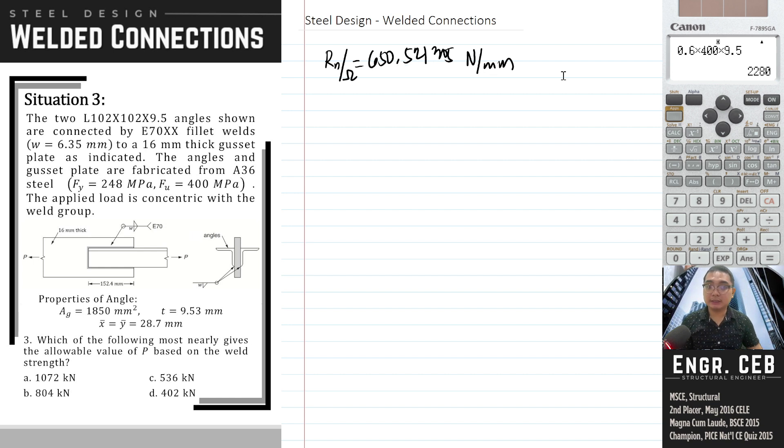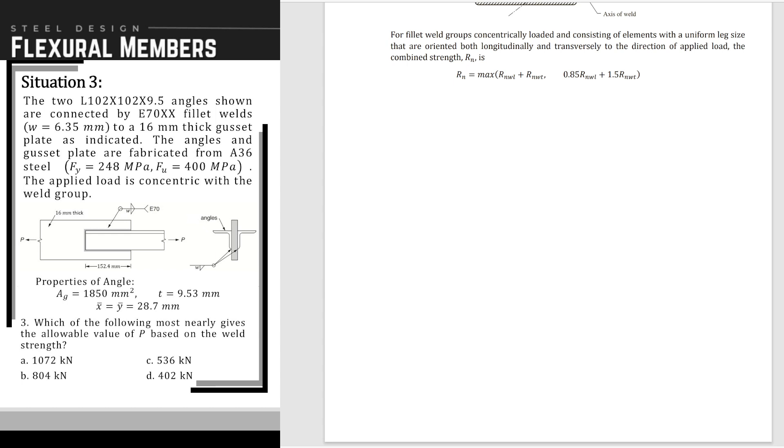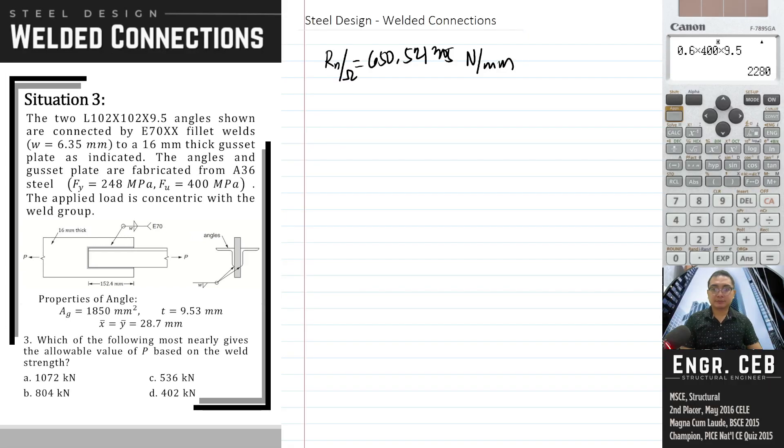Compute the weld strength based on our code. For fillet weld groups with uniform leg size oriented both longitudinally and transversely to the direction of the load, the combined strength formula is: Rn comes from two - Rn longitudinal plus Rn transverse, and the other is Rn equals 0.85 longitudinal plus 1.5 transverse. Whichever is higher between the two becomes the strength for the welds. Let's confirm first what our beta is based on the problem.